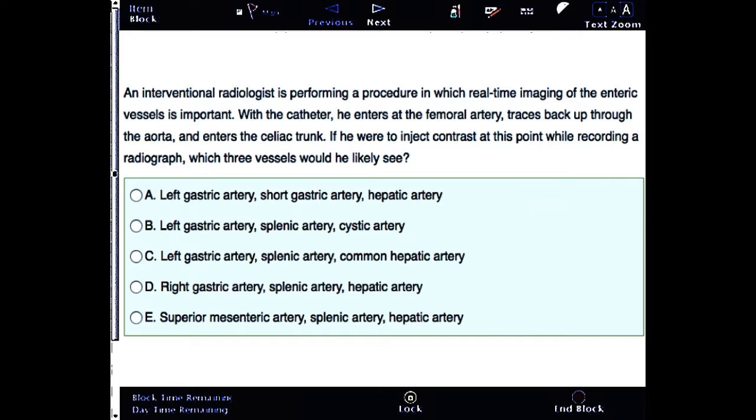Let's start. This question reads: An interventional radiologist is performing a procedure in which real-time imaging of the enteric vessels is important. With the catheter, he enters at the femoral artery, traces back up through the aorta, and enters the celiac trunk. If he were to inject contrast at this point while recording a radiograph, which three vessels would he likely see?